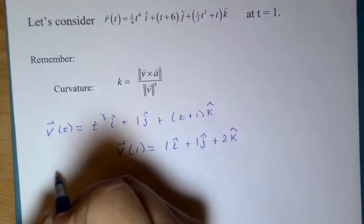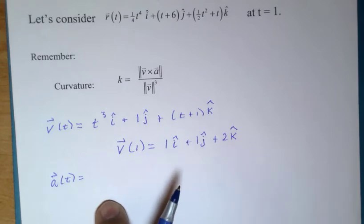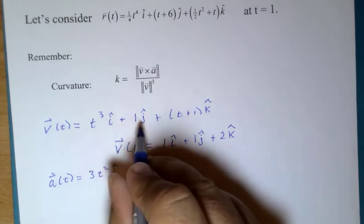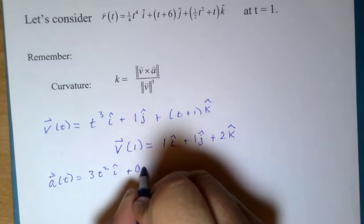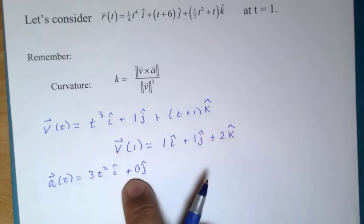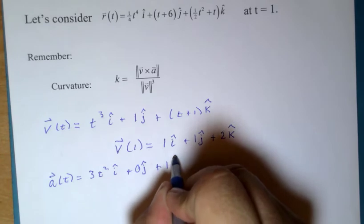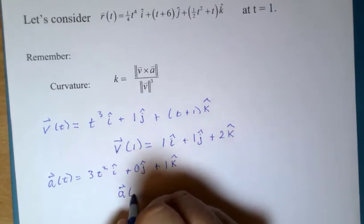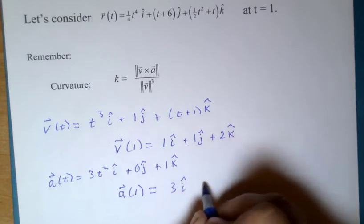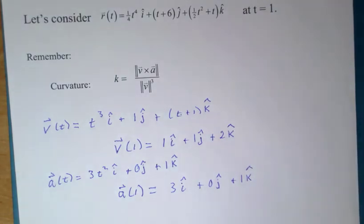Now, acceleration. Acceleration, the next derivative. So, that's going to be 3t² i plus 0 j. Allow me to write in the 0. It's not necessary to do that, but I want to make sure it's very clear that I know exactly what goes here. And the derivative of t plus 1 is 1. And that same acceleration vector, but evaluated at t equals 1, will be 3 times 1, which is 3, 0 j, and 1 k. Alright. Cruising along here.